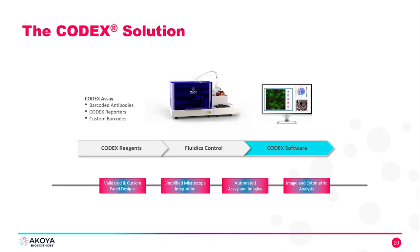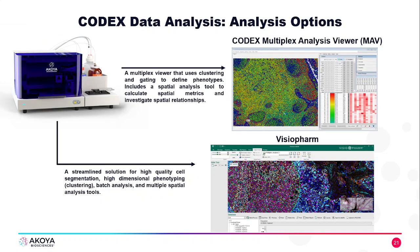In terms of software, we have the ability to use either Codex Multiplex Analysis Viewer, which is an ImageJ plugin, or we could use VisioFarm. Codex Multiplex Analysis Viewer, or MAV, is a multiplex viewer that uses clustering and gating to define phenotypes and includes a spatial analysis tool to calculate spatial metrics and investigate spatial relationships.